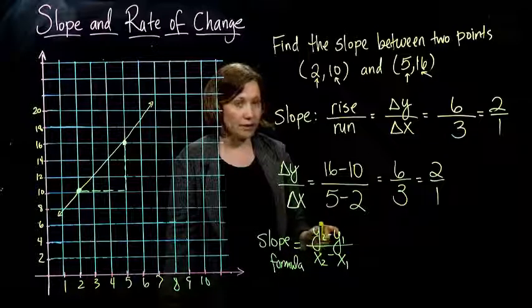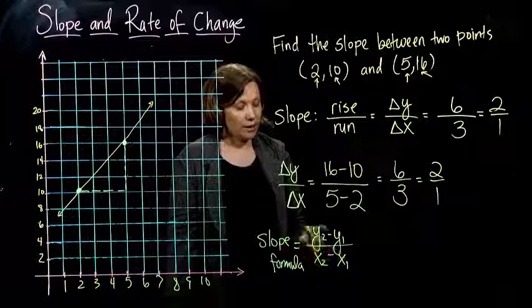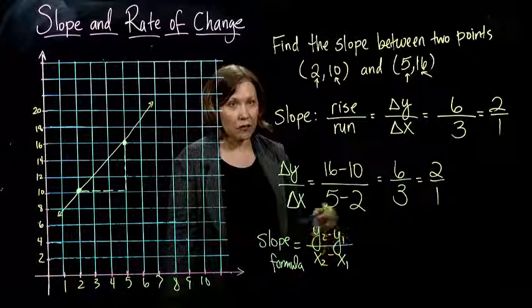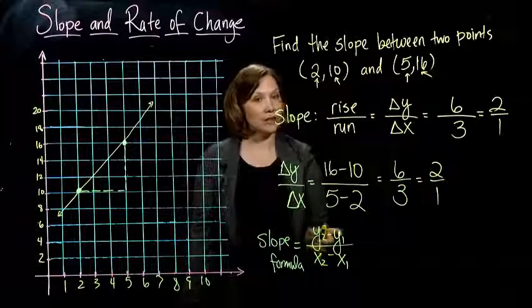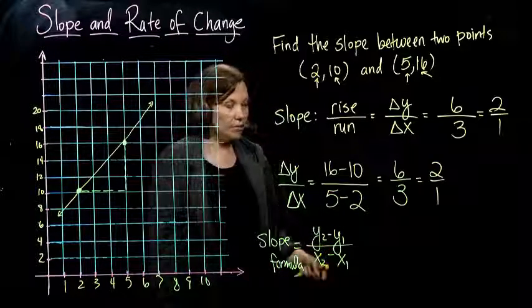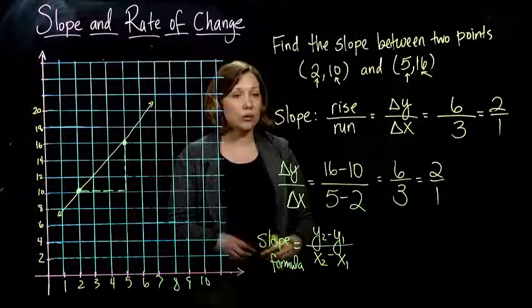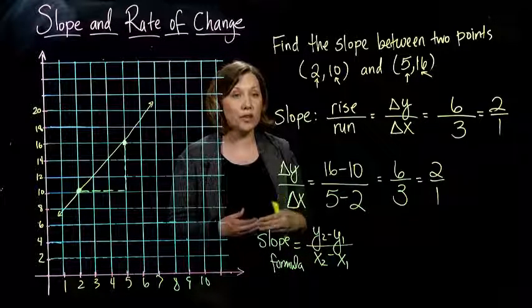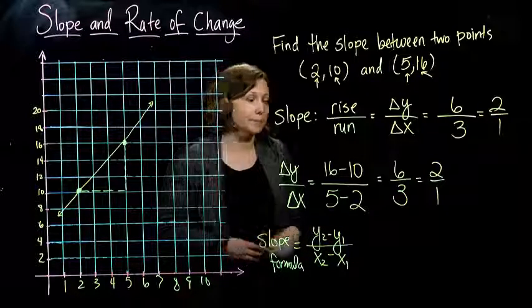And this is the slope formula that you so often see. And all it is, is finding the distance between the y values that they gave you for your points, over the distance between the x values that they gave you, change in y over change in x. And you can do that by counting it off, or we can do it with subtraction in this formula.